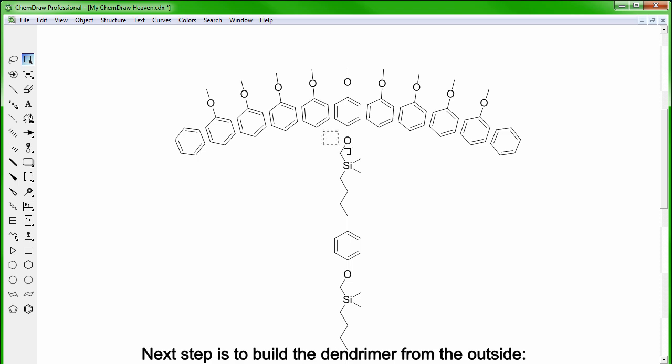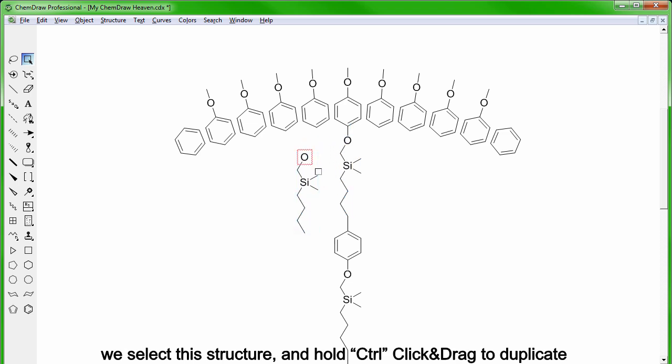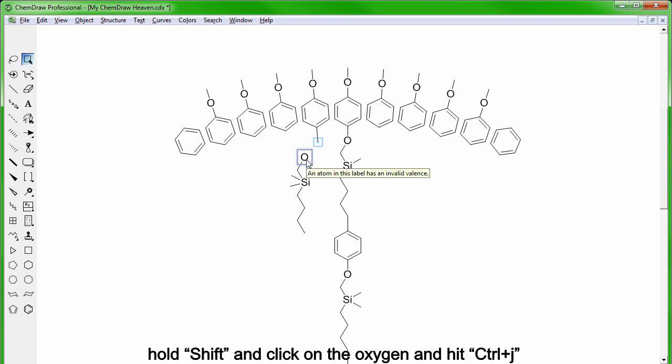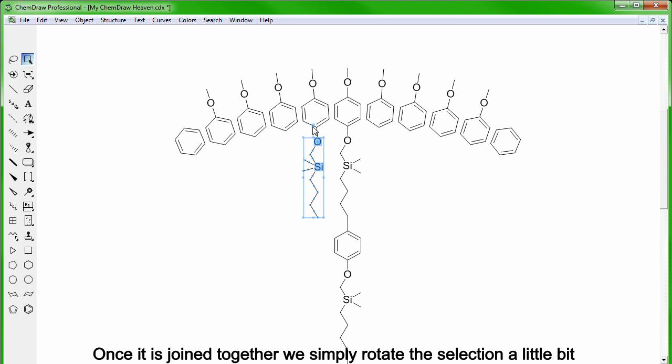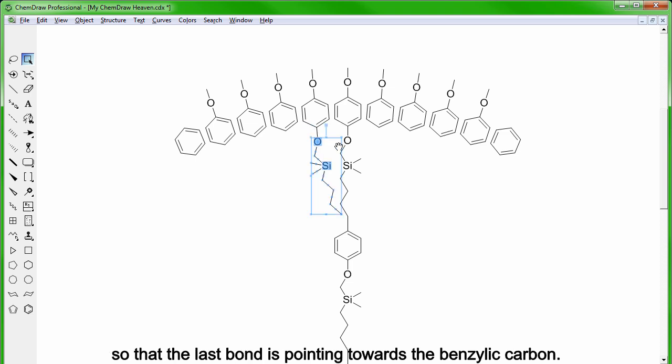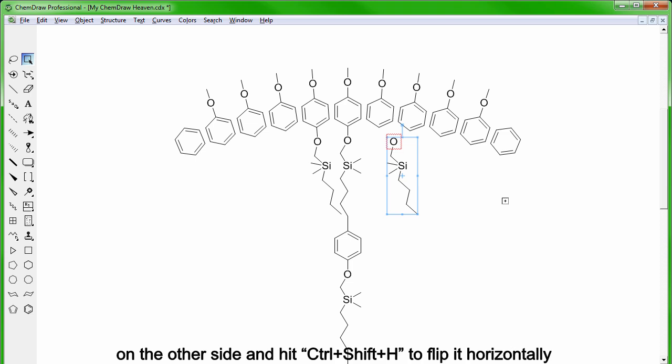Next step is to build the dendromer from the outside and to do this we select this structure, hold CTRL, click and drag to duplicate and readjust the metal groups here. What we do is to sprout a CC bond here, click on the carbon atom, hold SHIFT and click on the oxygen and hit CTRL-J to join. Remember the first one selected does not move. Once it is joined together we simply rotate the selection a little bit so that the last bond is pointing towards the benzylic carbon. Once that is done we hit CTRL then click and drag the selection on the other side and hit CTRL-SHIFT-H to flip it horizontally.